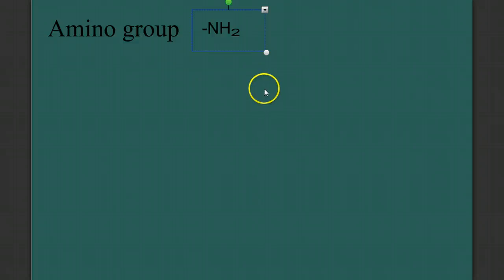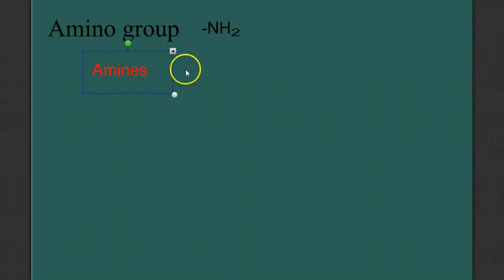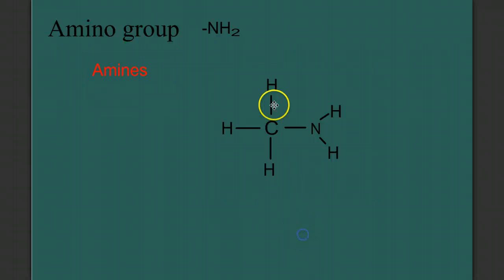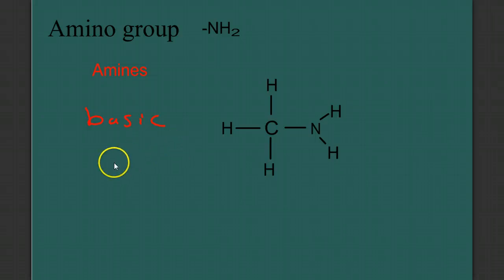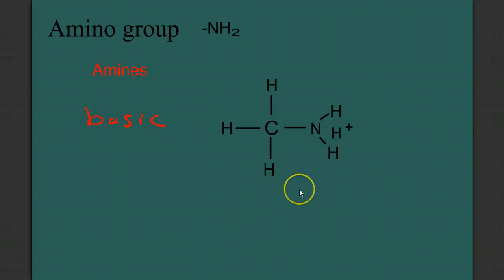Our next functional group is the amino group, which we designate as NH2. It makes up a class of molecules called the amines — when you add an NH2 to a hydrocarbon, you make it into the amine family. When we draw this structurally, it's an N with two H's on it, so NH2. The amine groups are basic. If we remember what bases are, bases are proton acceptors — so the nature of this molecule is that it will accept a proton and become positively charged. You'll often see these drawn as NH3 with a positive charge on it.